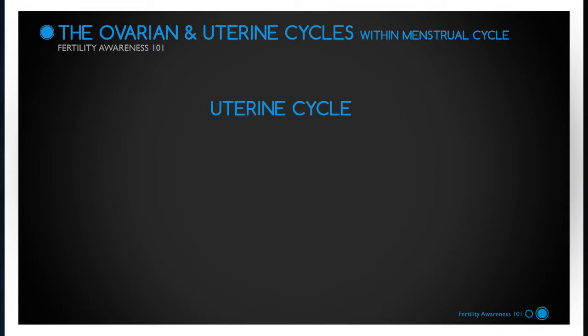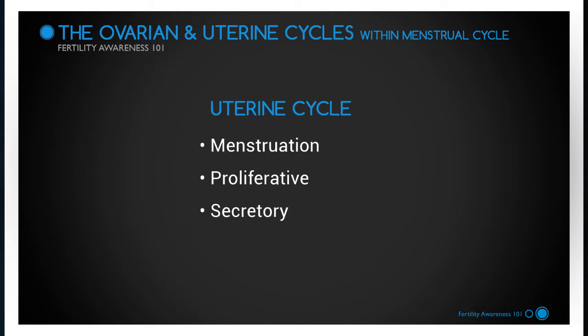We have been discussing the ovarian part of the cycle. Now we will discuss the uterine part of the cycle. The uterine cycle has three phases: menstruation, proliferative, and secretory.